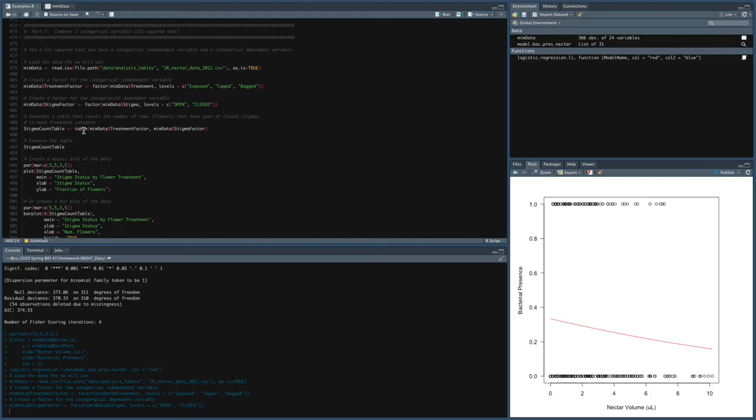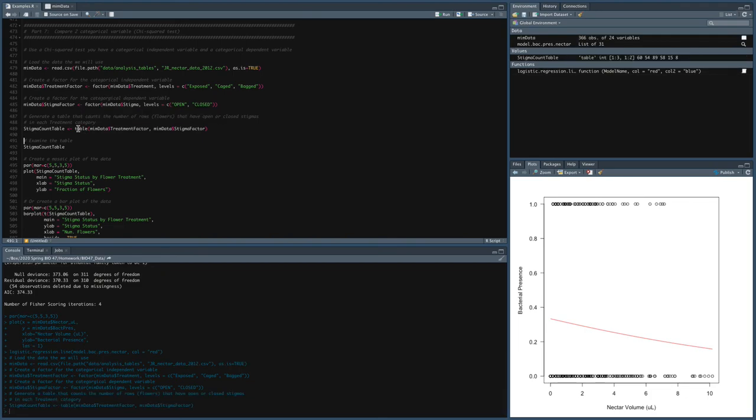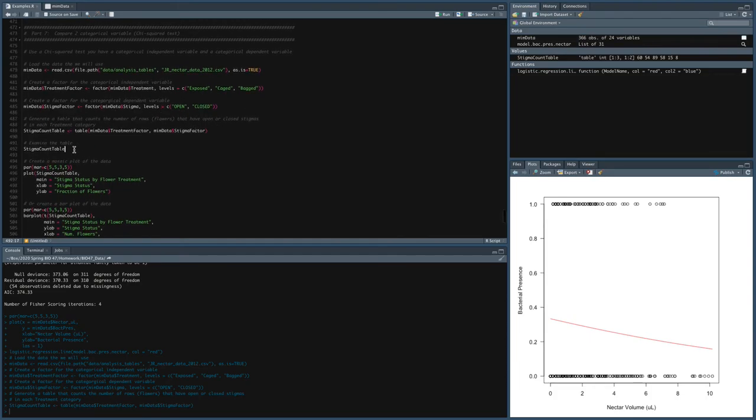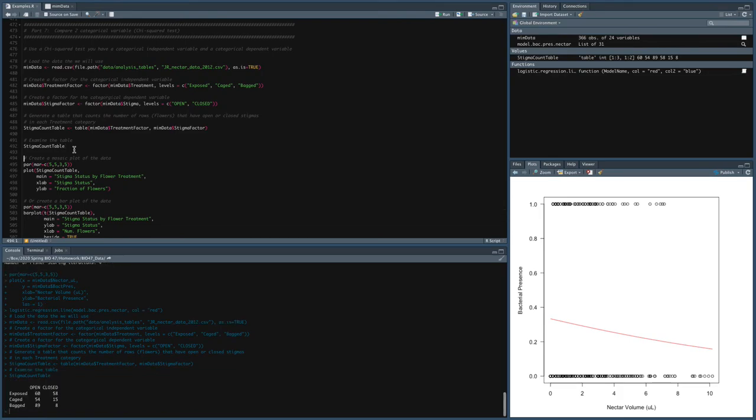So this line does that. It creates a table and it takes in treatment factor and stigma factor. Those are our categorical independent and categorical dependent variables that we factored up here. All right, so let's take a look at what stigma count table is.